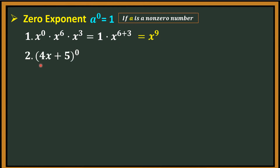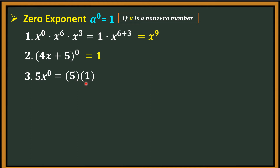Another example: the quantity of 4x plus 5, quantity raised to 0. Notice we have open and closed parentheses — it is grouped. So this entire group is raised to 0; therefore the answer is 1. Number 3: 5x raised to 0. In this case, the 0 is only raised to x, so x becomes 1 but 5 is not affected. You just copy 5 and times 1 — the answer is 5. Next: x raised to 0 over 3y. The 0 is only raised to the numerator x, so the numerator becomes 1, giving 1 over 3y.